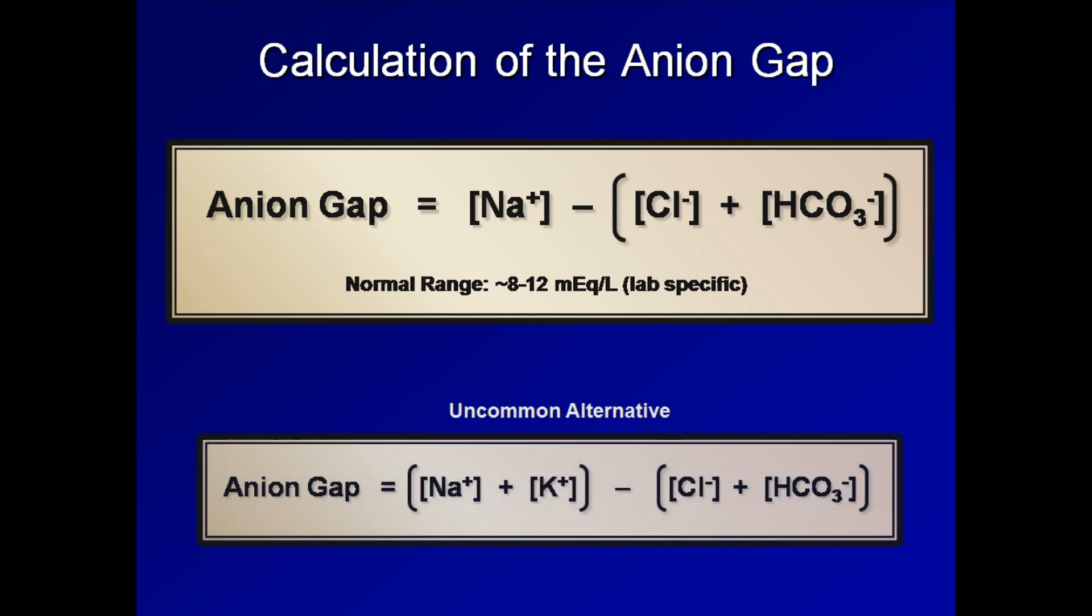An uncommon alternative to the above calculation is to include potassium. Thus, the anion gap is equal to the sum of the sodium and potassium minus the sum of the chloride and bicarb. Using this alternative, one would expect the normal range to be closer to 12 to 16.